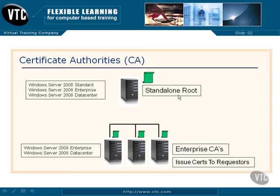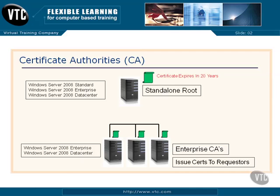A standalone root doesn't have to be running Active Directory — we use it to create the root-level security, the absolute end-all proof of who we are. The standalone root can run on Windows Server 2008 Standard; that's all you need to remember. It can also be Enterprise or Data Center. But the enterprise CAs, which have to be part of Active Directory, must be on either Enterprise or Data Center. Watch for this on the exam: the only edition that can be Standard is the standalone root. Enterprise CAs cannot be Standard.